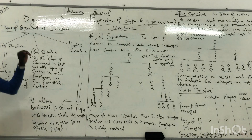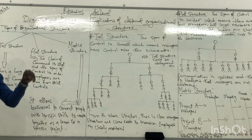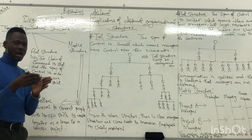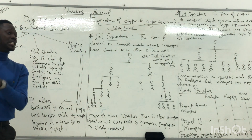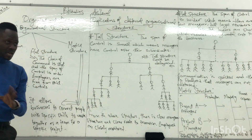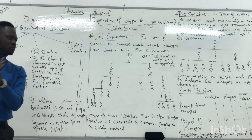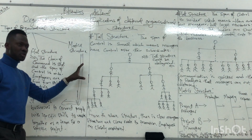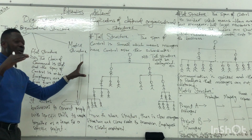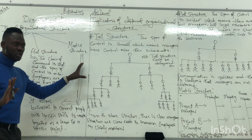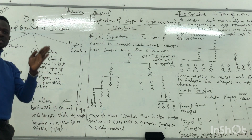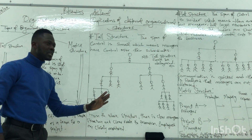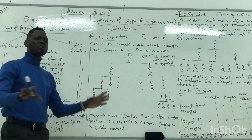Today we want to talk about the types of organizational structure. Organizational design is about how the structure of an organization is arranged. So when we talk about organizational structure, different companies will come up with their own structure. Company A's structure will be different from company B, and company B's structure will be different from company C. So there are different structures entirely.